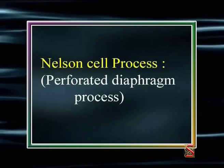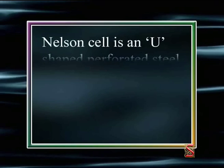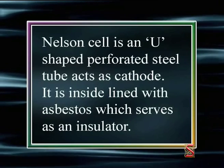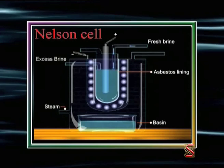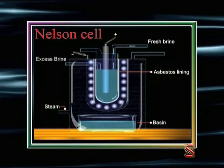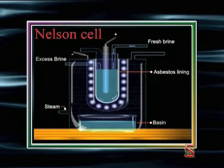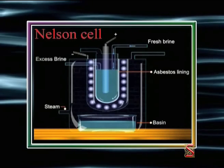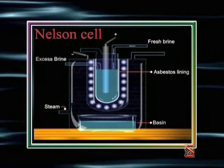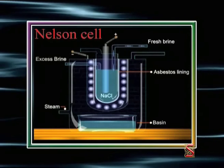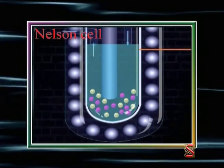The Nelson cell process is also known as the perforated diaphragm process. The Nelson cell is a U-shaped perforated steel tube which itself acts as the cathode. It is lined inside with asbestos, which serves as an insulator. This tube is kept in a rectangular outer vessel. Brine solution, which is aqueous solution of sodium chloride, is taken in the U-tube.